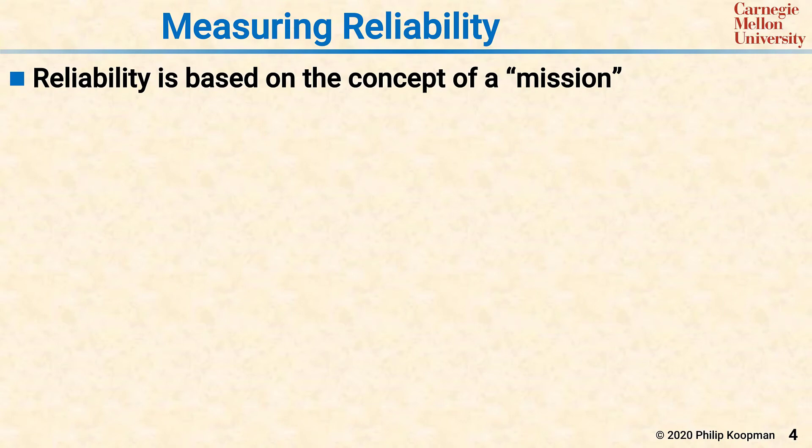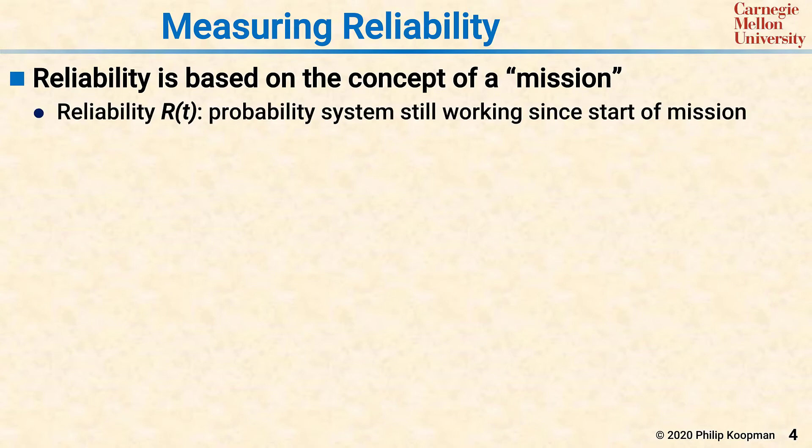Reliability is a much narrower concept than dependability and has a mathematical formulation. In contrast to availability, reliability is the probability that the system will still be working at the end of a particular mission.